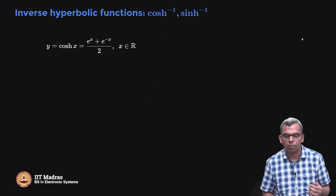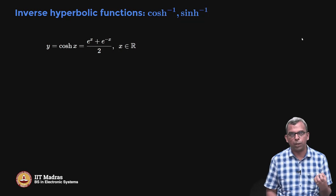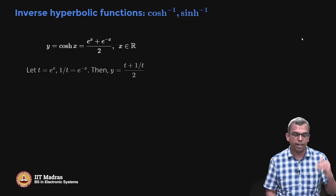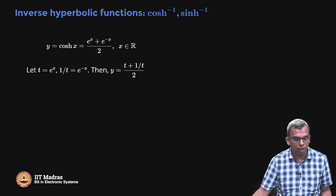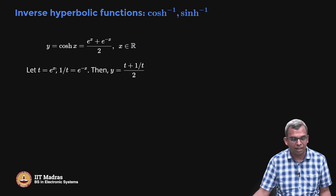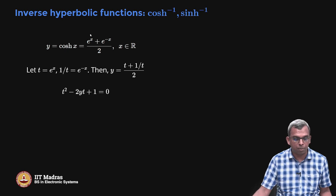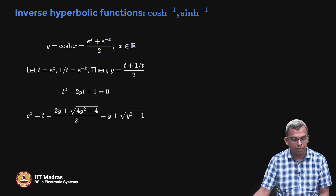The first question is how do you compute the inverse? We will start with the inverse of cosine and sine hyperbolic functions. y equals cosh(x) is (e^x + e^(-x))/2. x can be any real number, but y goes from 1 to infinity. Supposing you call t = e^x, then y = (t + 1/t)/2. So you get a quadratic equation in t: t² - 2yt + 1 = 0.